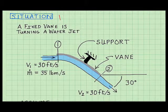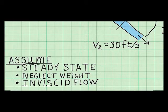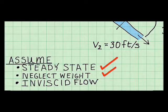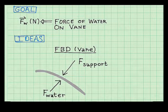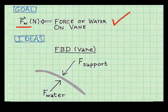Here's how I start my documentation — I capture all the problem information. I assume steady state, meaning properties are constant with time at each point in my control volume. I neglect the weight of the water and of the vane itself, and I assume inviscid flow so that the Bernoulli equation applies. My goal is the force of the water on the vane, and I use vector notation to remind myself that this has both magnitude and direction.